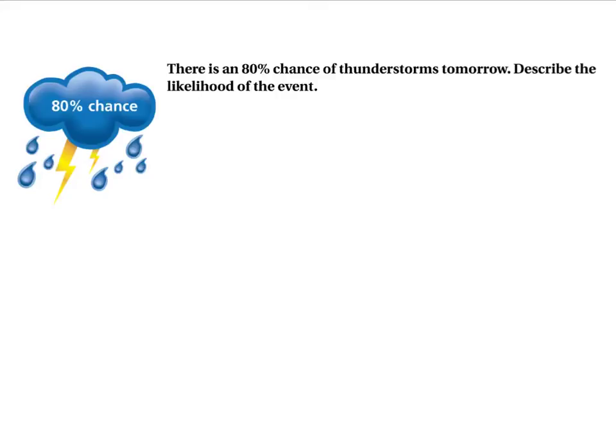All right, example problem here. There's an 80% chance of thunderstorms tomorrow. Describe the likelihood of the event. Well, 80% is 80 out of 100, which is 0.8, 4/5, if you want to look at it as a fraction.